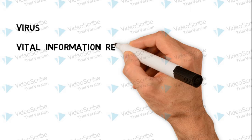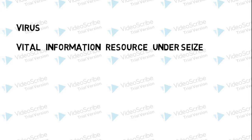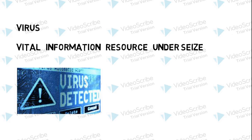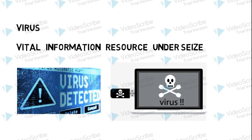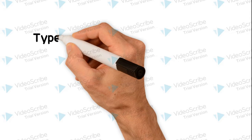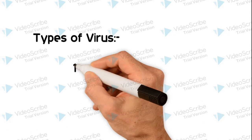Let's start. Virus — the long form is Vital Information Resources Under Seeds. Virus exists in two things: computer virus and biological virus. We will talk about the computer virus. We will see the types of virus, their effects, and their work functions.